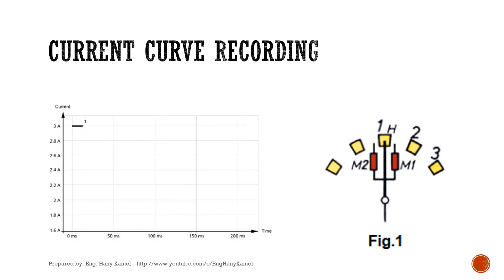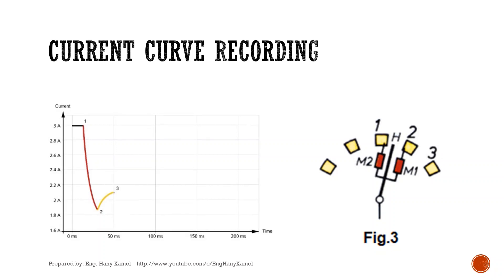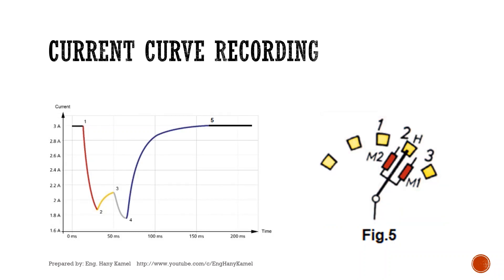For current curve recording: as the tap changer is at tap number 1, the injected DC current is, for example, 3 amperes and stable. When we change to tap number 2, the main moving contact leaves tap 1, and the left transition moving contact with its resistor R2 carries the current — so current drops. The right transition moving contact then reaches tap 2 while the left transition contact is still on tap 1, giving current paths through R1 and R2, so current increases. The left transition contact then leaves tap 1, so current flows through R1 only and drops again. Finally, the main moving contact reaches tap 2 and current returns to 3 amperes.